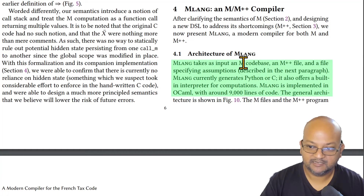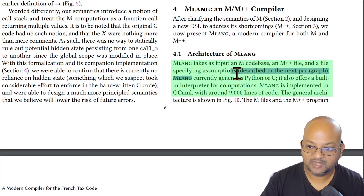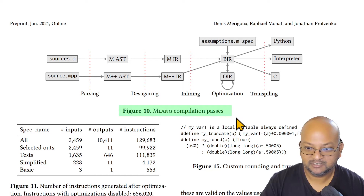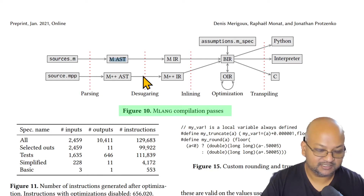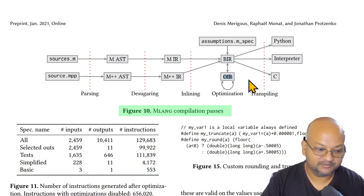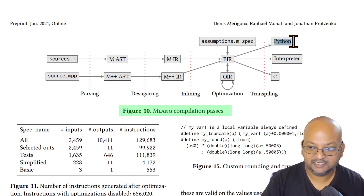They call their compiler MLang. It takes M code as well as M++ files as input and compiles to either Python or C, and also has an interpreter mode. The compiler is implemented in OCaml in around 9,000 lines of code — pretty manageable. Its structure follows a pipeline architecture like most modern compilers: source files are parsed into abstract syntax trees, compiled into an intermediate representation, then down to lower-level IRs including a backend IR and an optimized IR, from which it finally generates output code in Python or C.